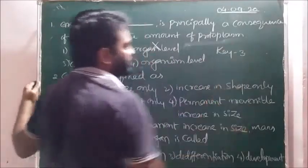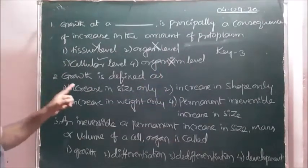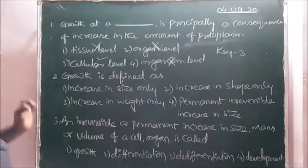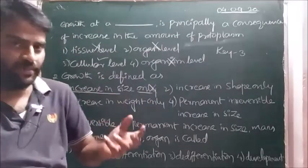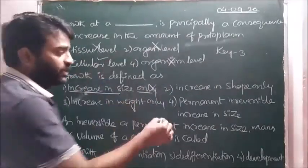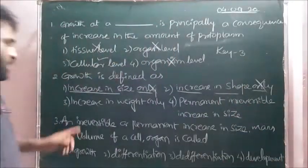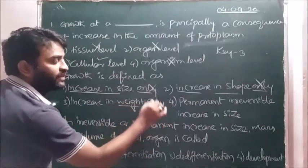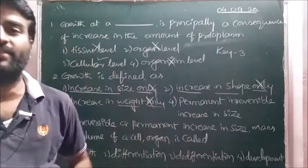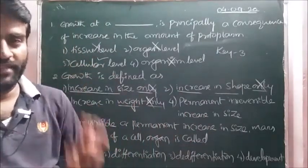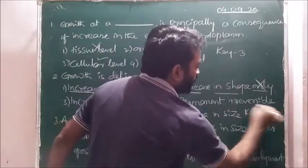Organism level is also wrong. Next, second question: growth is defined as increase in size correct, but only is mentioned wrong. Growth has various parameters in various forms. Increase in shape correct but only is given wrong. Increase in weight correct but only is given, hence wrong. Permanent irreversible increase in the size, weight, length, dry weight, wet weight, everything is correct. Answer for this question, key is four.